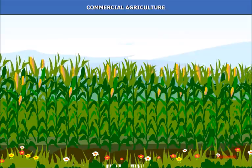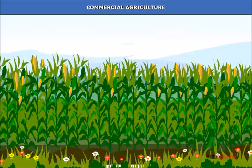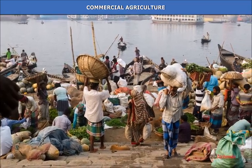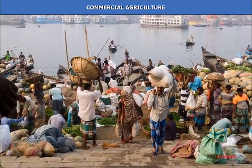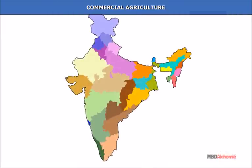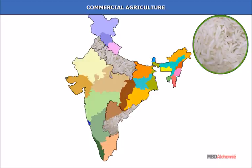Commercial agriculture: In commercial agriculture, crops are raised for the market. In India, commercial agriculture has also taken roots after the Green Revolution in the 1970s. Many parts of Punjab, Haryana, Western Uttar Pradesh and Andhra Pradesh now specialize in commercial farming of basmati rice, though the size of farms is small and mechanization is not as extensive as in Europe and the USA.